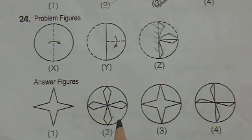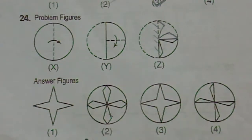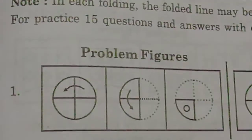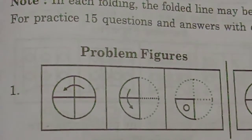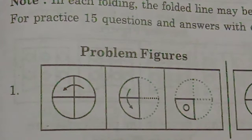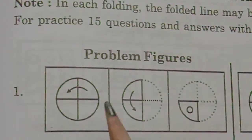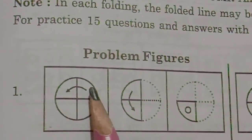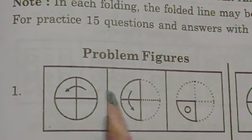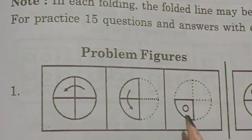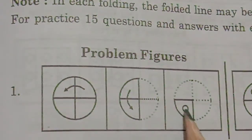One more example I will solve, after that you can practice many questions from the books also. Let's try one more question — we can see here a circle-shaped paper. In that, the first folding is this one half, the next folding is this one, and after that they made one small circle.